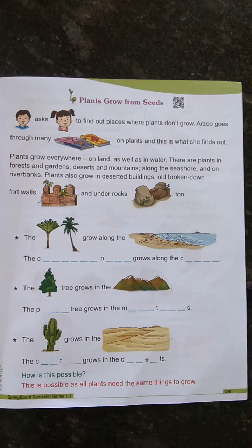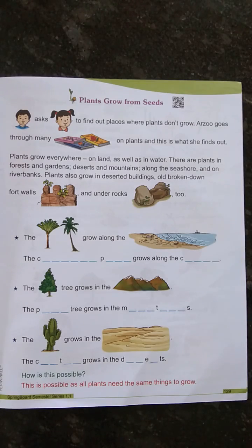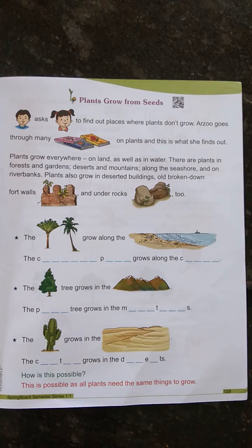Do we eat all seeds? No. Some seeds you can eat, while some you should not eat, and some you cannot eat. Seeds you can eat include peanuts, tomatoes, ladyfinger, beans, and so on. You should not eat mango and orange fruit seeds. And you cannot eat peach, pumpkin, apple seeds, and so on.